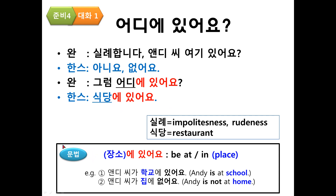Okay. Look at this grammar, 문법. 어디어디에 있어요? 어디 is 장소, the place. Place에 있어요 means be at place or be in place. Actually, 에 is a location or place marker. Attach 에 to a noun or place to indicate the location of something or somebody. The verb 있어요 and 없어요 is always used in this case.